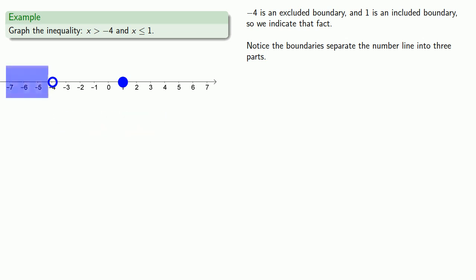So, let's take a look at our three parts. In the leftmost part, x greater than negative 4 is NOT true, so we must omit this portion.